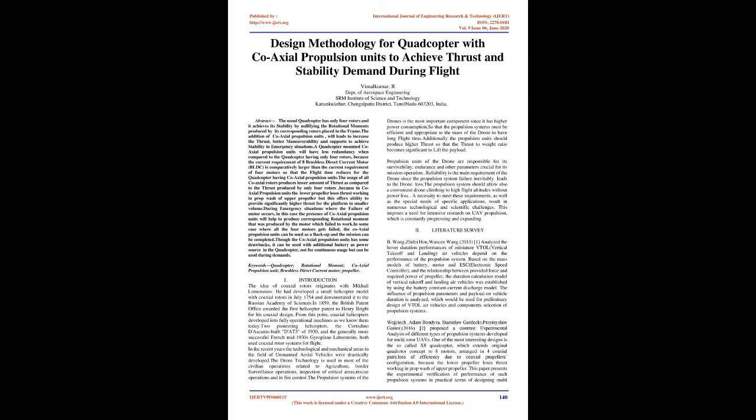Abstract: The usual quadcopter has only four rotors and it achieves its stability by nullifying the rotational moments produced by its corresponding rotors placed in the frame. The addition of coaxial propulsion units will lead to increased thrust, better maneuverability, and supports to achieve stability in the frame during emergency situations. A quadcopter mounted with coaxial propulsion units will have less redundancy when compared to the quadcopter having only four rotors, because the current requirement of a brushless direct current motor (BLDC)